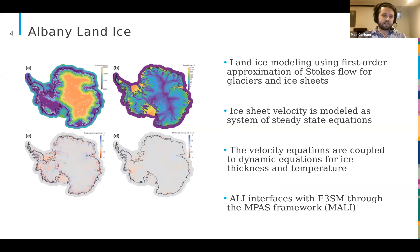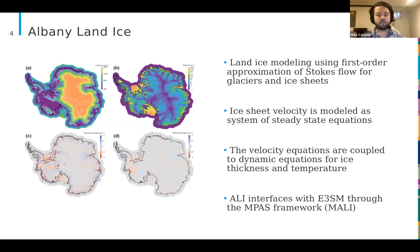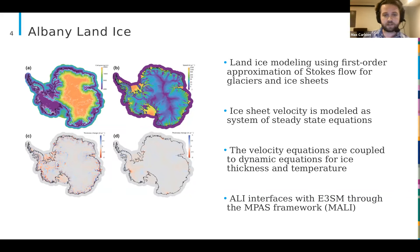Albany Land Ice is a model for modeling glaciers and ice sheets using a first order approximation of Stokes flow. The velocity of the ice sheet is modeled using a system of steady state equations of this first order Stokes approximation, and then these velocity equations are coupled to dynamics equations for ice thickness and temperature. The Albany Land Ice model interfaces with E3SM, the MPAS framework — the multi-scale prediction across scales framework — and that project is called MALI, allowing for variable resolution meshes.